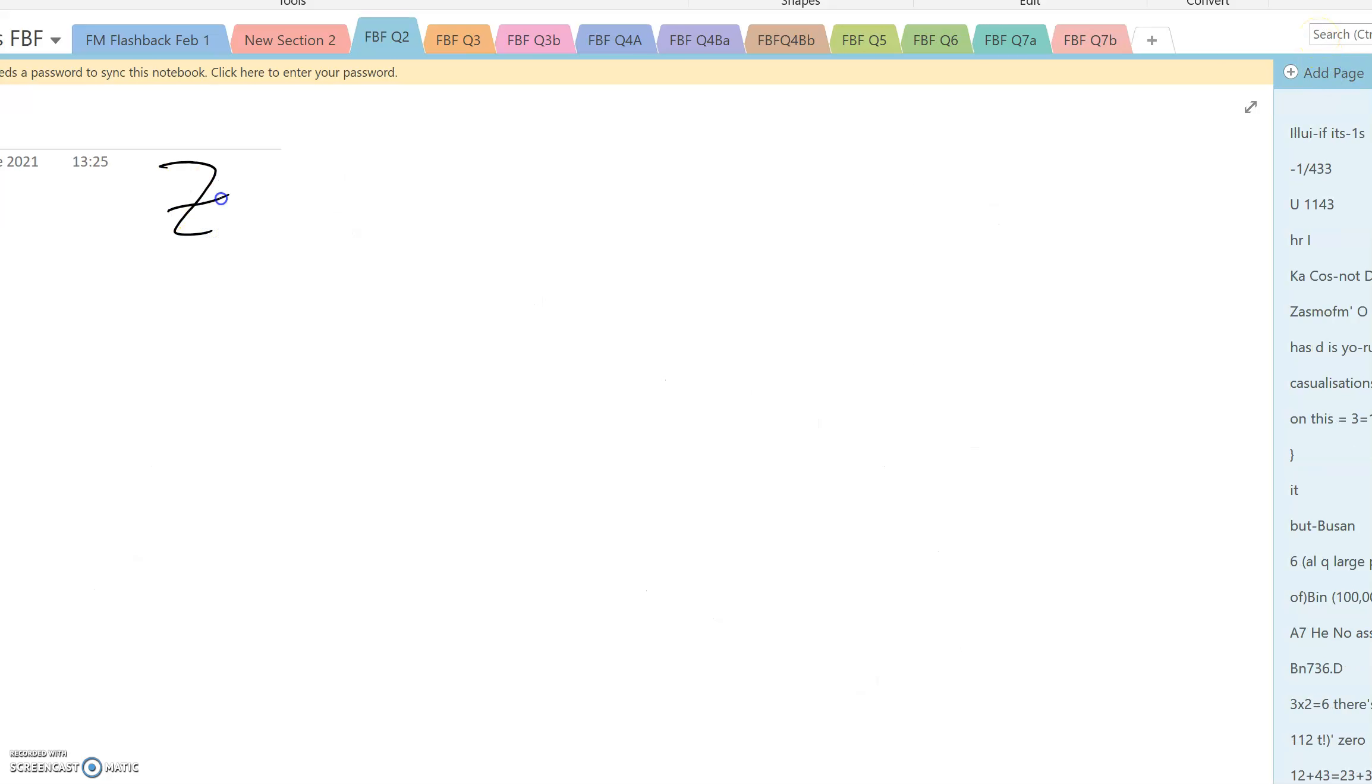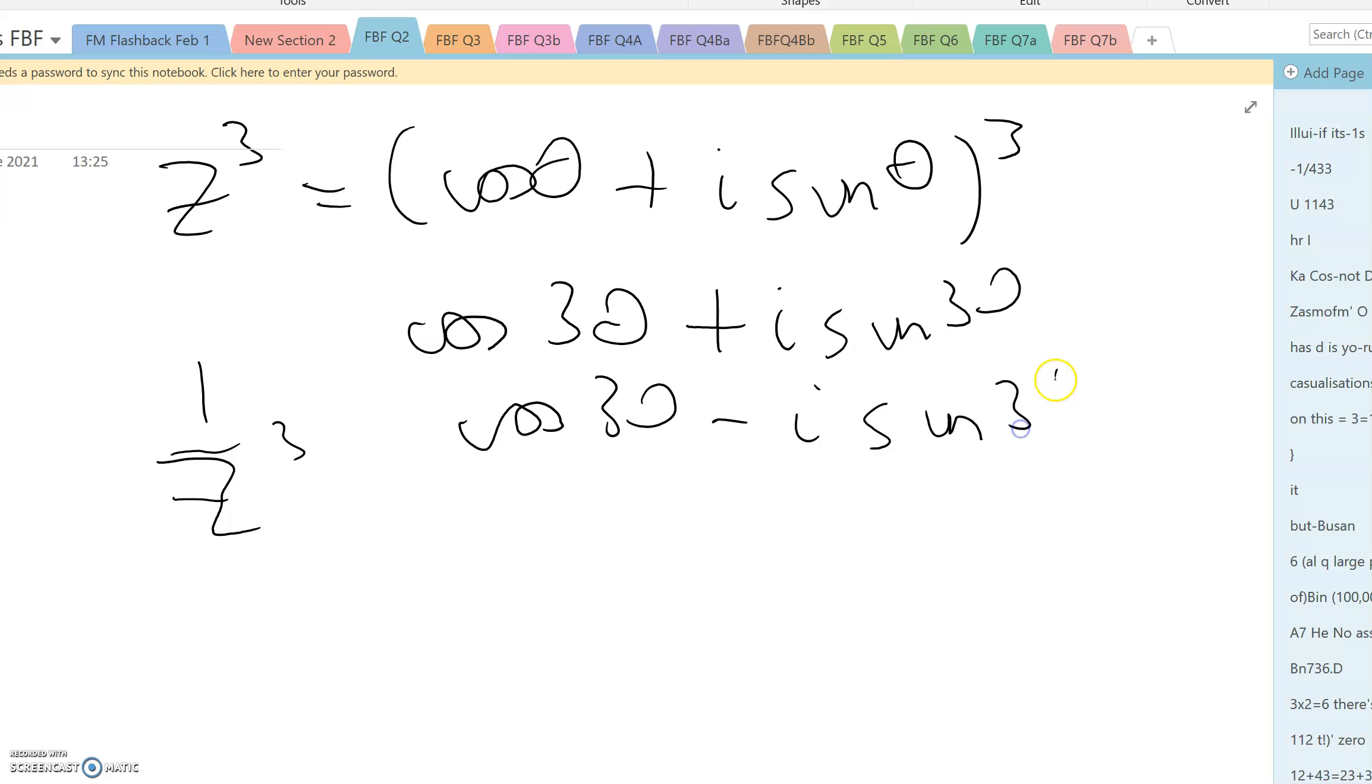Now z cubed is cos theta plus i sine theta cubed, which according to de Moivre's theorem is cos 3 theta plus i sine 3 theta. And similarly, 1 over z cubed is cos 3 theta minus i sine 3 theta. So z cubed plus 1 over z cubed is going to be 2 cos 3 theta.